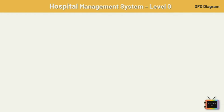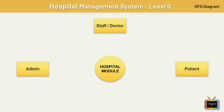Now let's draw the zero level DFD diagram for the hospital management system. The zero level DFD defines the overview of the whole hospital management system and is supposed to be an abstract view of the overall system. This is also called a context diagram, where the entire system is represented as a single process with its relationships with external entities such as admin, staff, and doctor.